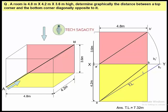I will tell you about the question. I will tell you about the dimension of the room. I will show you the distance between the top corner and the bottom corner, diagonally opposite. The room dimensions are 4.8m, 4.2m, and 3.6m height. This is the room — this is the length, breadth, and height.